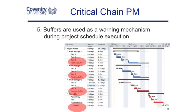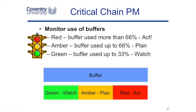The fifth concept of critical chain is to use feeding buffers. I've highlighted the feeding buffers inserted into this Microsoft Project plan. The way you use these buffers is: if you start to use up to 33% of the feeding buffer, you report that as green and just monitor the situation. As you approach 66% of your buffer, you plan to take some corrective action. Once you've used more than 66% of the buffer, you take action — you're in the red zone. So we report on the consumption of the buffers, tying back to the first concept that we're not going to report dates or durations but rather how much of the feeding buffer we've used.